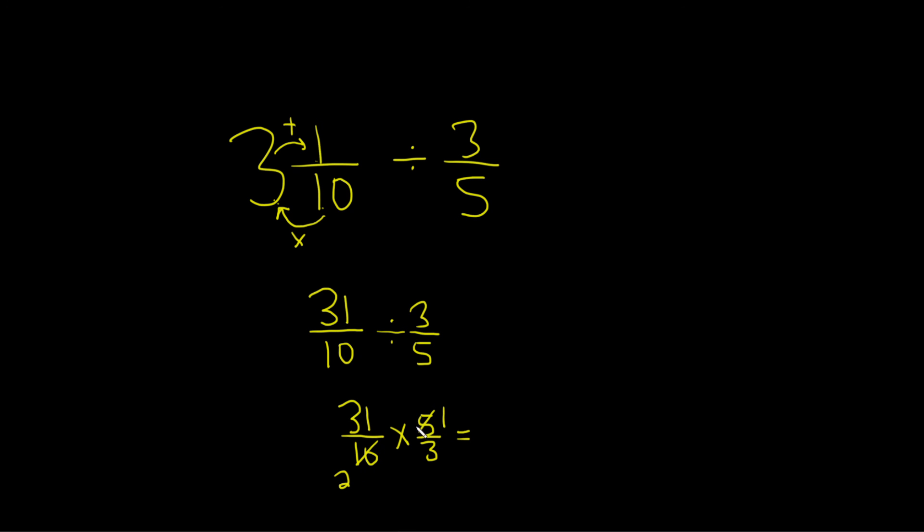And now we just multiply straight across. 31 times 1 is 31. 2 times 3 is 6. And that would be the final answer.